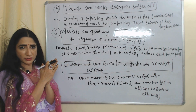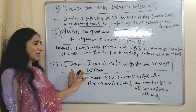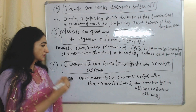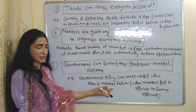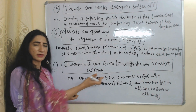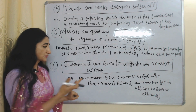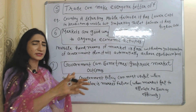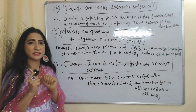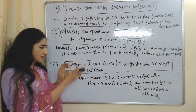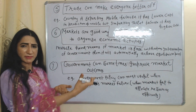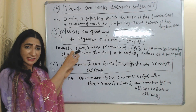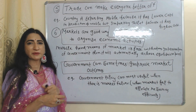The next principle is government can sometimes improve market outcomes. Sometimes government can improve market outcomes — for example, in case of market failure, government policies can be beneficial. Market failure is a situation when the market fails to allocate resources efficiently. In such a case, if the government makes some rules, regulations, or policies, it can improve the economy from market failure.